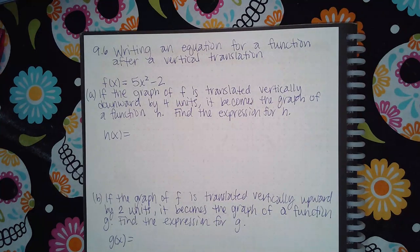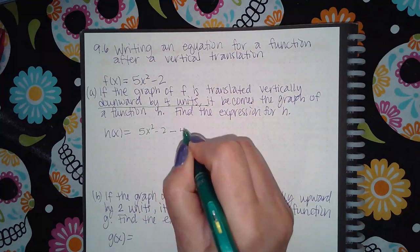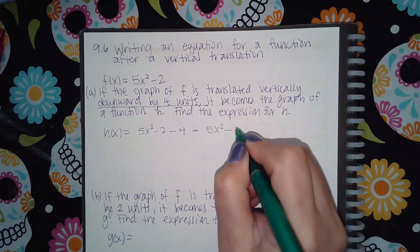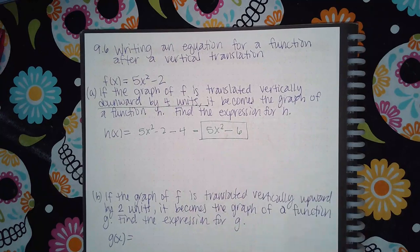And then part a: if the graph of f is translated vertically downward by 4 units, it becomes the graph of a function h. Find an expression for h. Now remember,